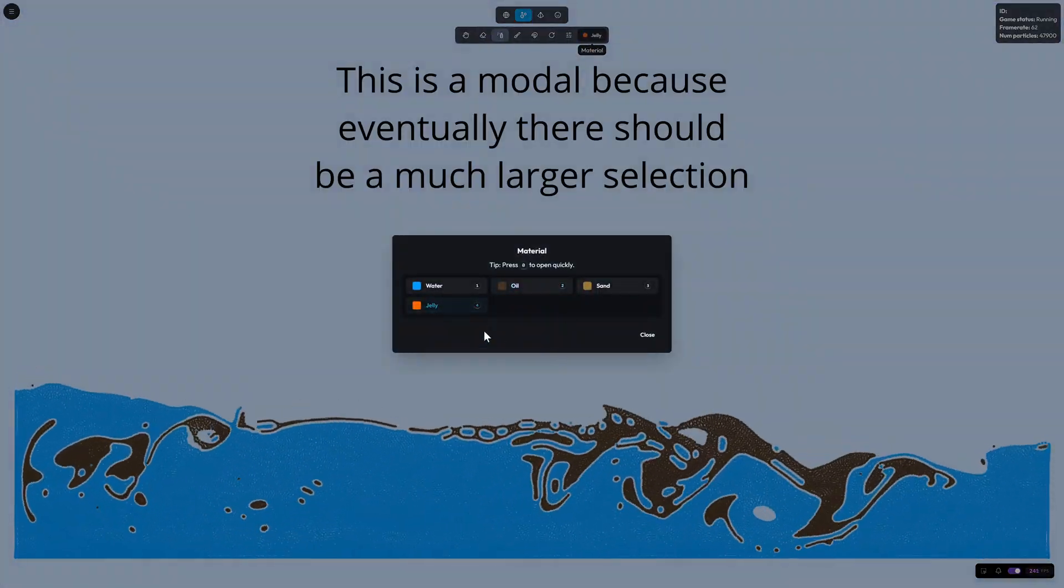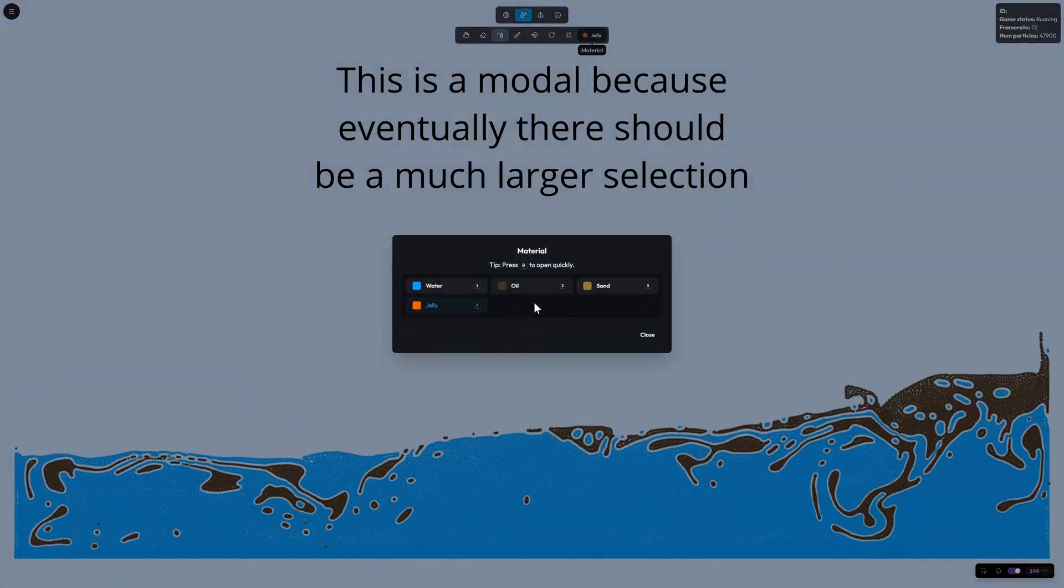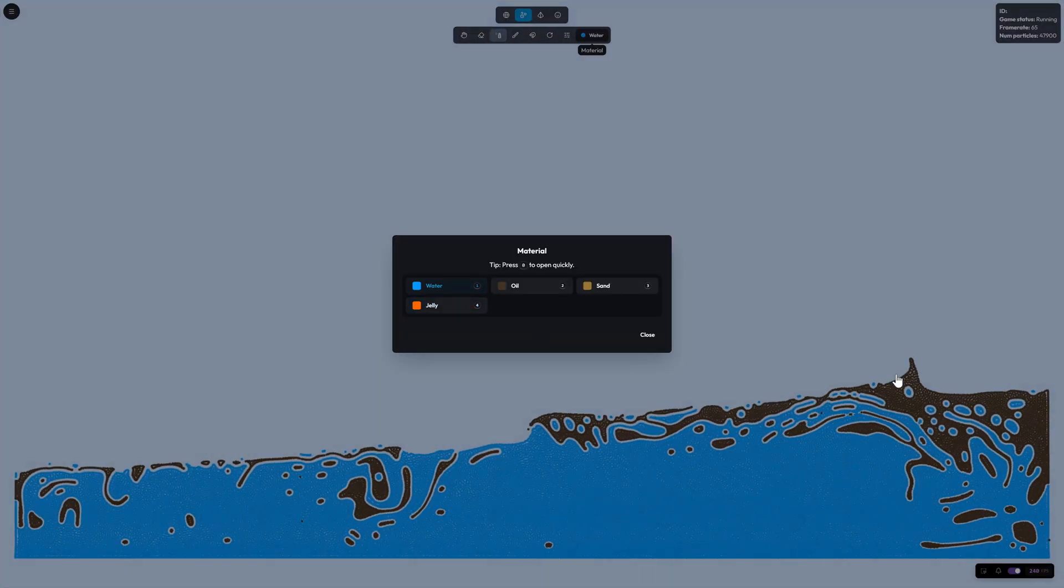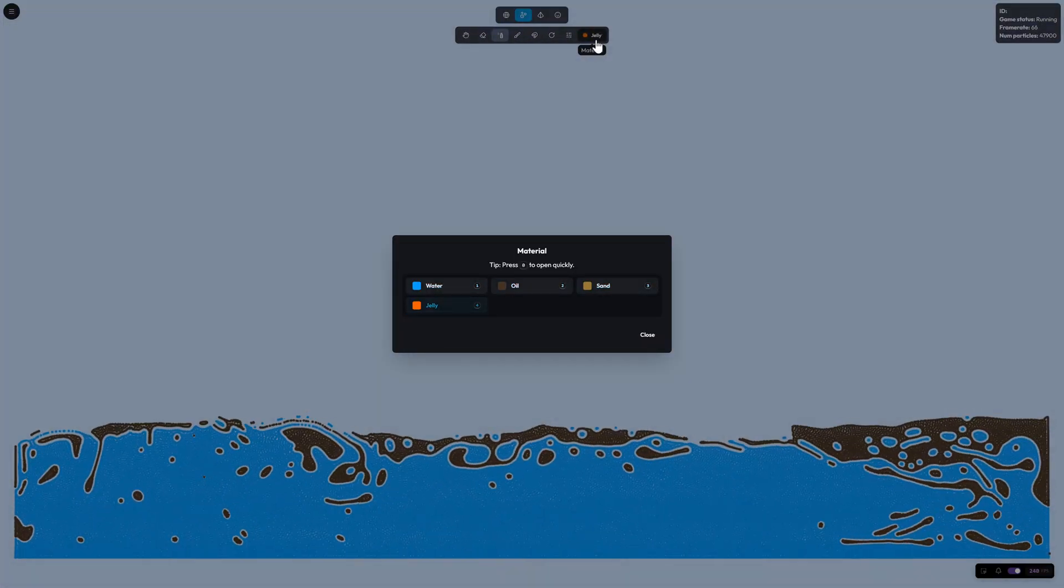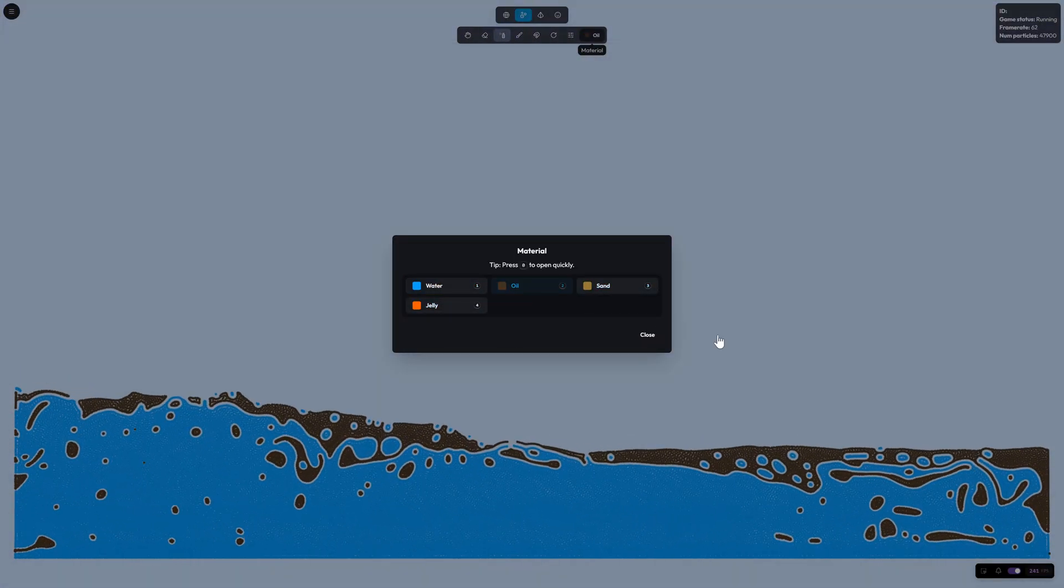For example, I've been playing around with some components. I have, for example, the hotkey working. If I press 1, 2, 3, 4, you'll see up here it's changing. Over here, the highlighted one also changes.